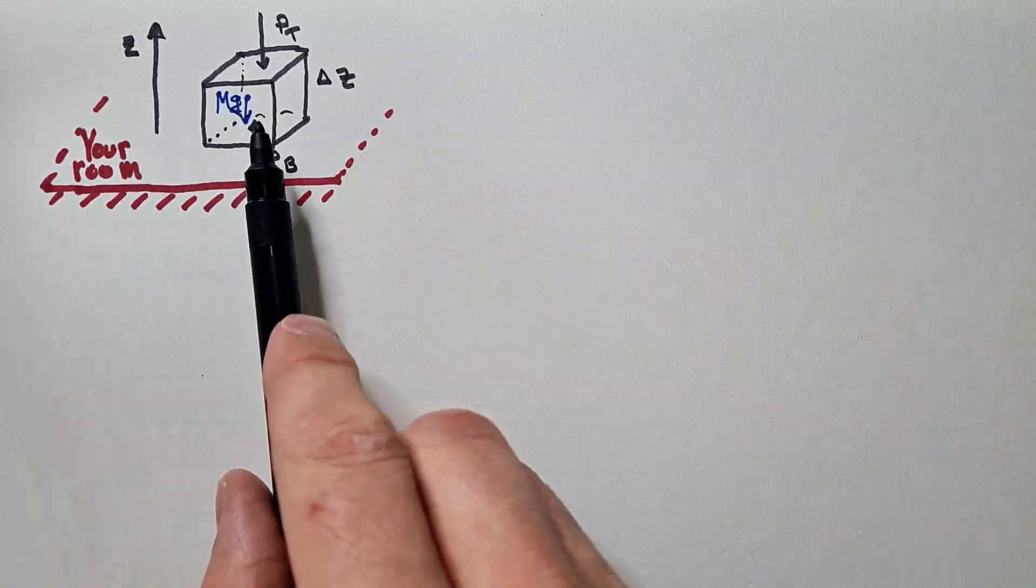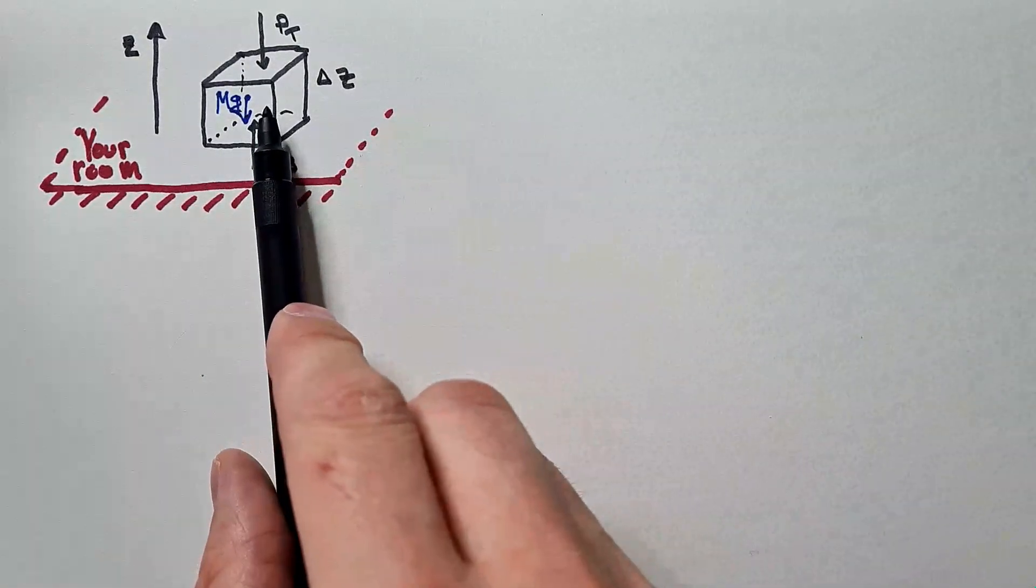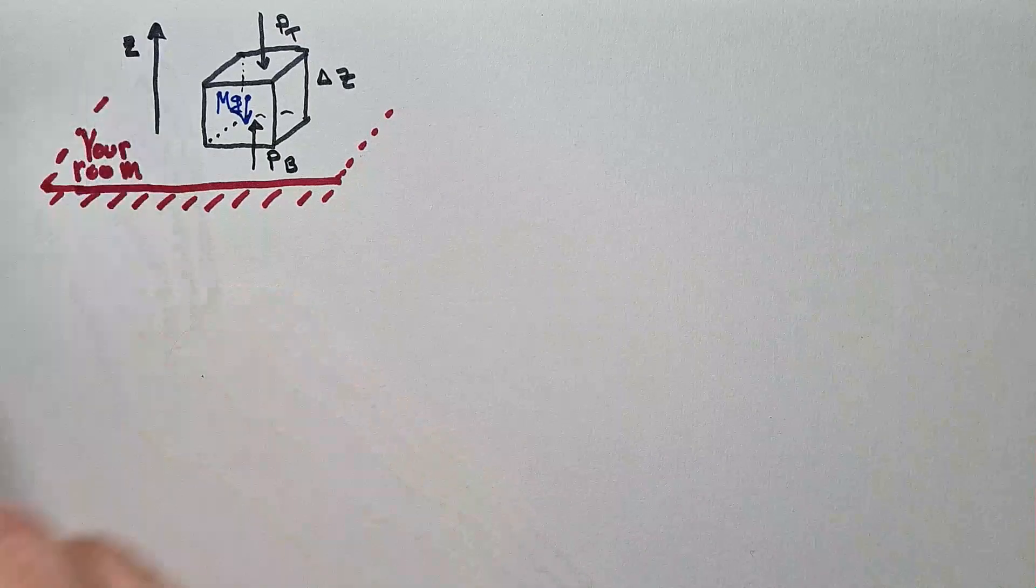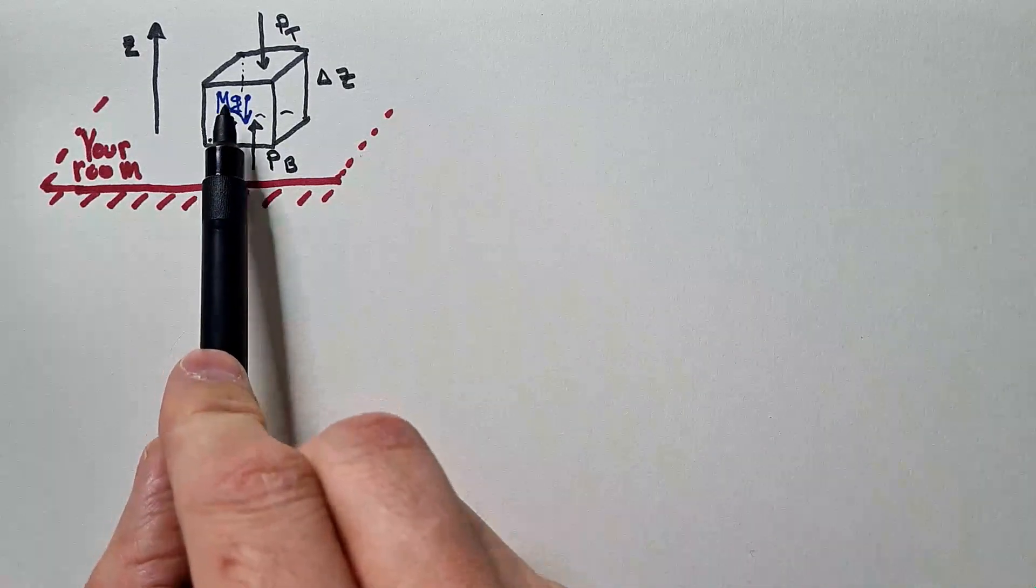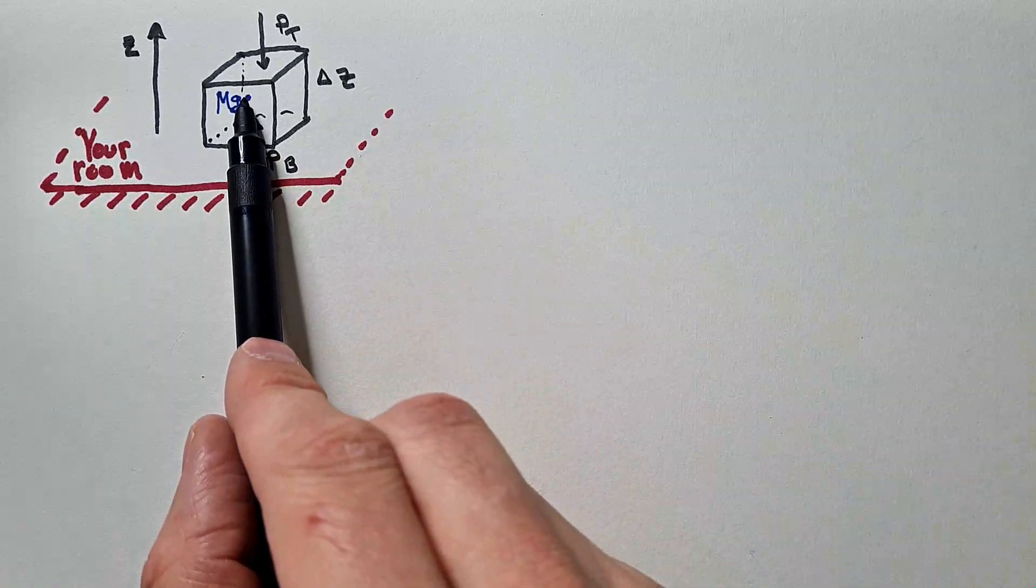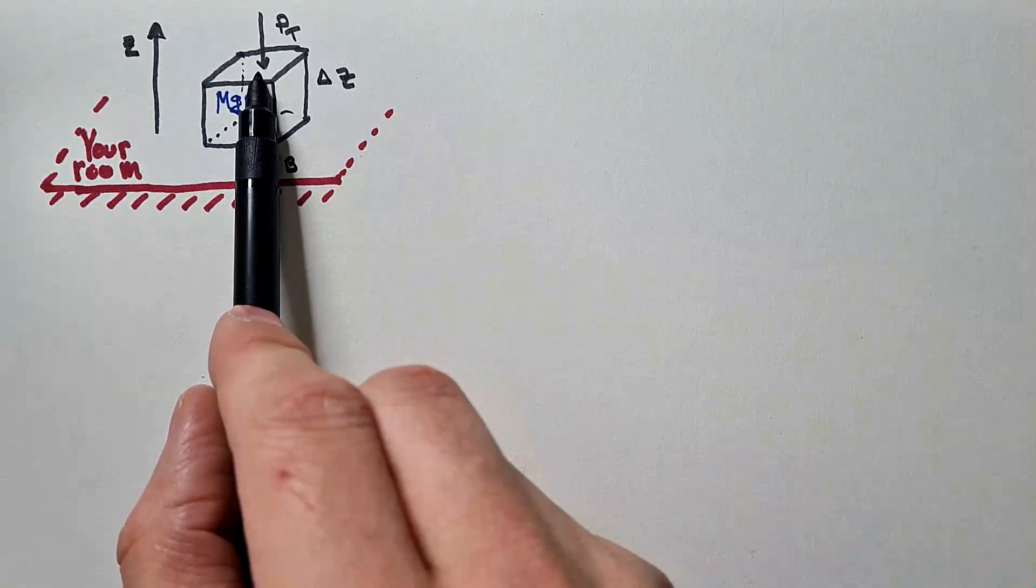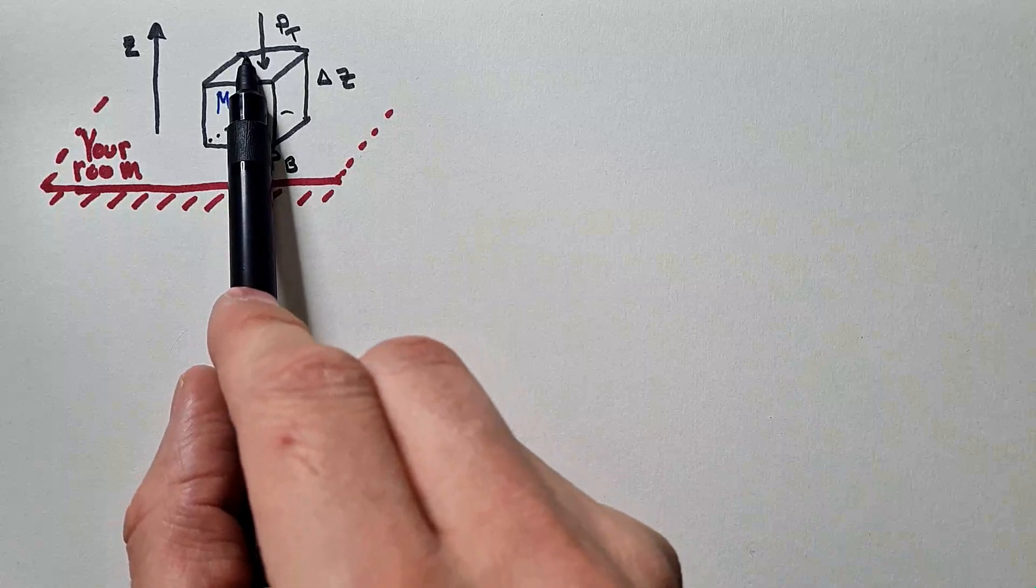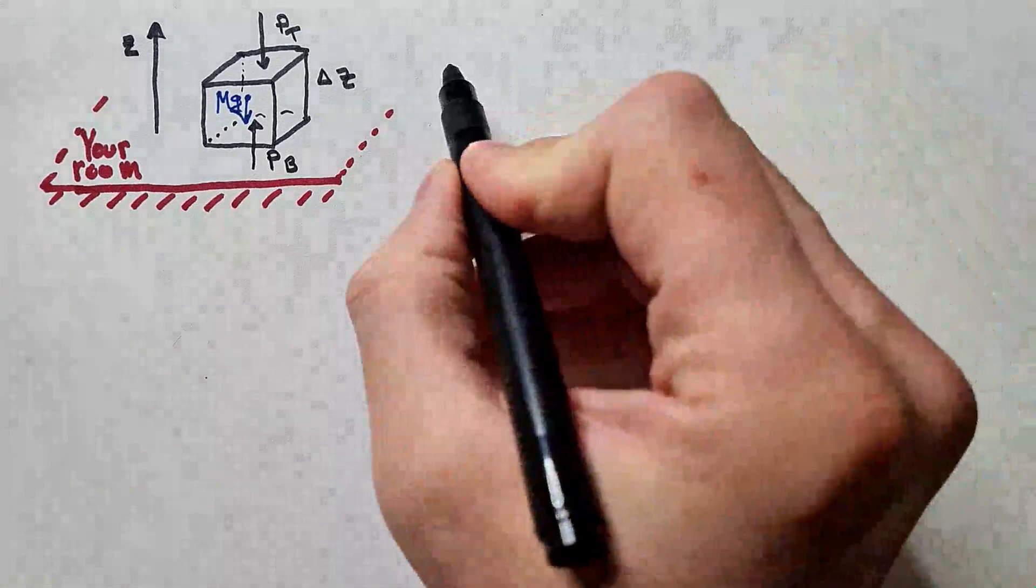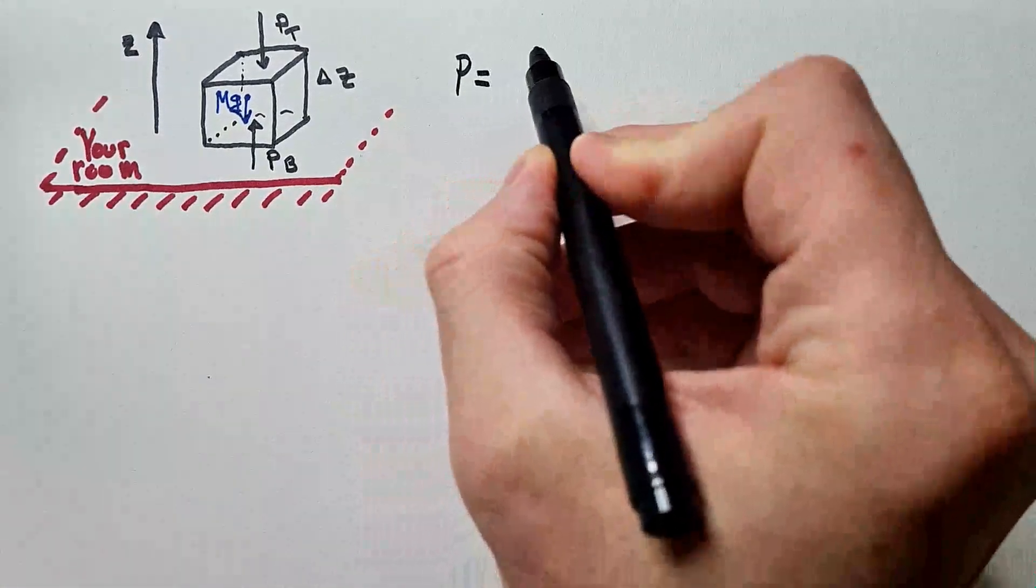Without any further ado, let's go and derive equation for hydrostatic equilibrium. Imagine that we are in your room. There is a box of air with this rectangular shape. The height of this box or container is delta z. Positive z axis is up. The mass of air in this imaginary box is capital M. And there is weight mg due to gravity.